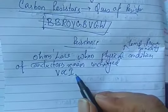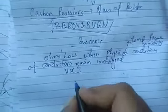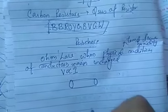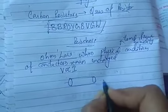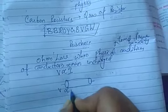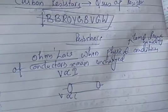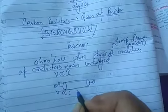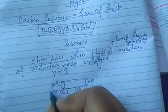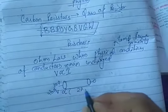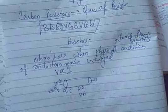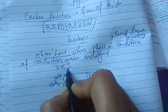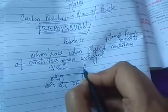When physical conditions of a conductor remain unchanged, potential difference is directly proportional to current. For example, if one end is at zero volts and the other at 10 volts, the current flowing is 2 amperes. If the potential doubles to 20 volts, the current also doubles to 4 amperes.